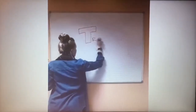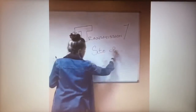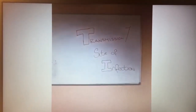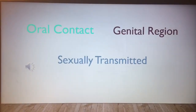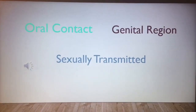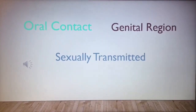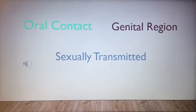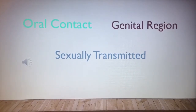Transmission and the site of infection. Type 1 is transmitted by oral contact, causing infection in and around the mouth. Type 2 is transmitted by an STI and causes infection around the genital or anal regions.